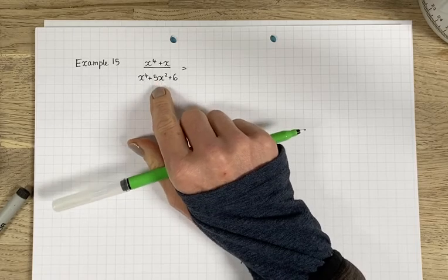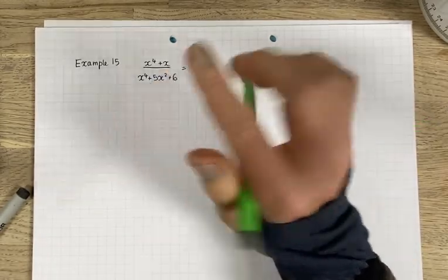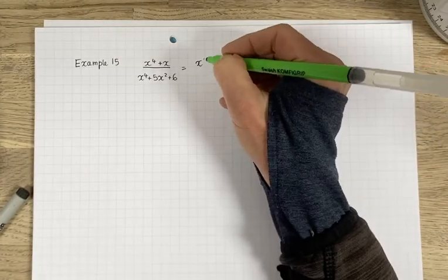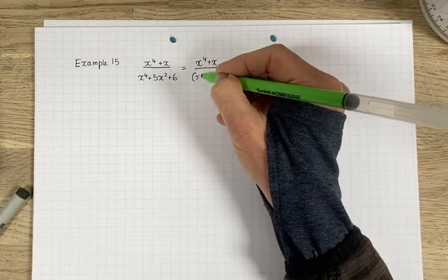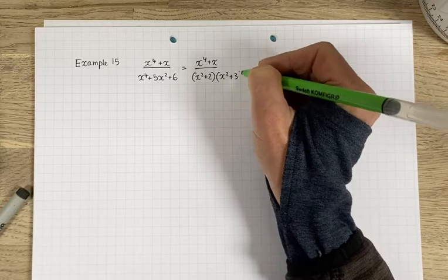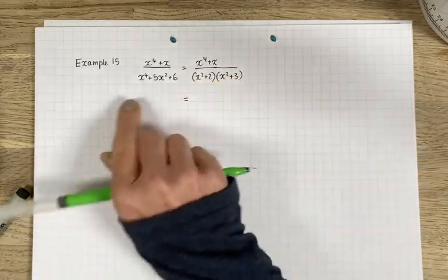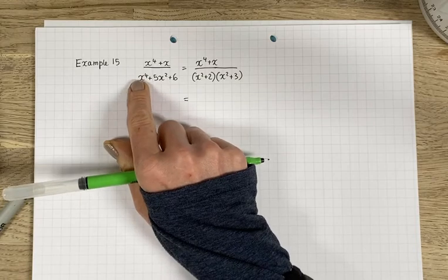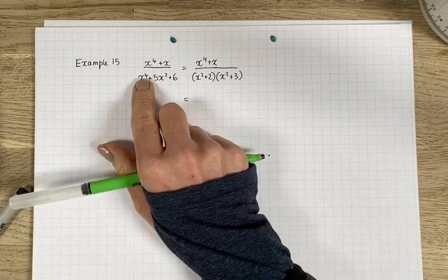So before we do that and show how it can be split, let's just factorize the denominator because you can do that easily. So it's x squared plus 2 times x squared plus 3. In fact you should know that if you were to divide it by a box method,